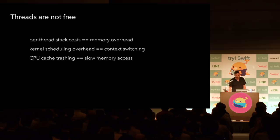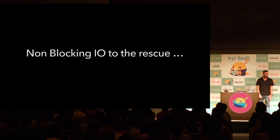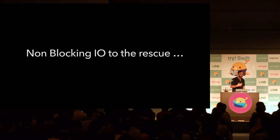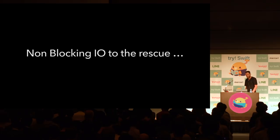So what can we do about this? Non-blocking IO to the rescue — which means asynchronous programming. How do other languages and environments solve the complexity introduced by async programming? On the JVM and languages that run on it — Java, Scala, Kotlin, and others — there is Netty, which provides an easy-to-use abstraction. In Swift today, there is nothing like Netty; there's nothing you can use out of the box.